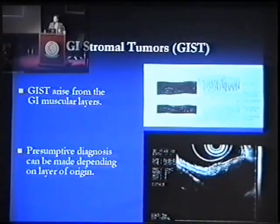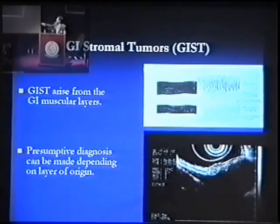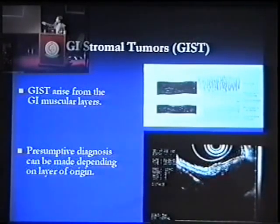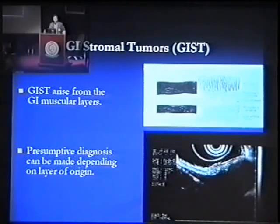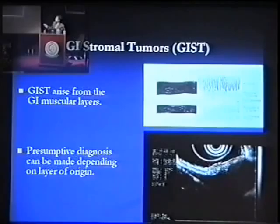Looking at the layer in this case, there's a big lesion, and this is continuous with the second black layer. So this is originating from the muscularis propria layer. By that, we can be confident that this is a GIST.